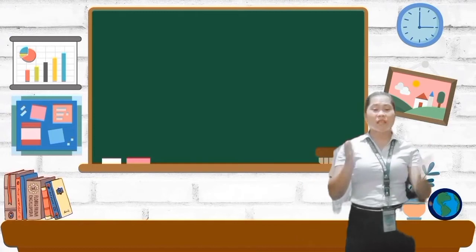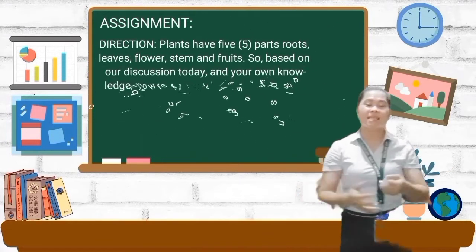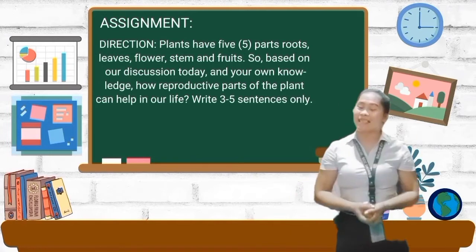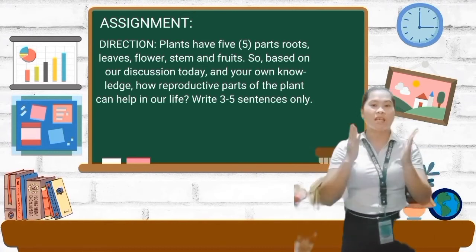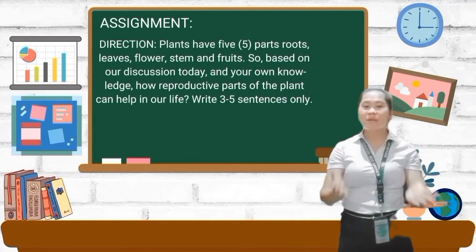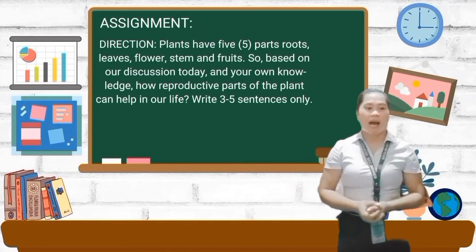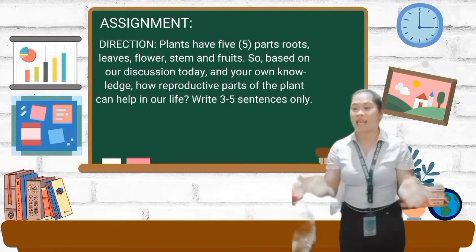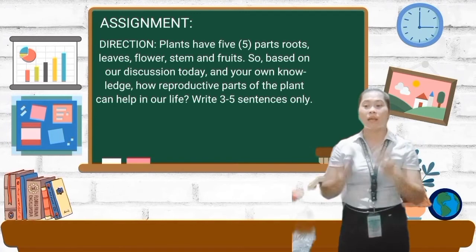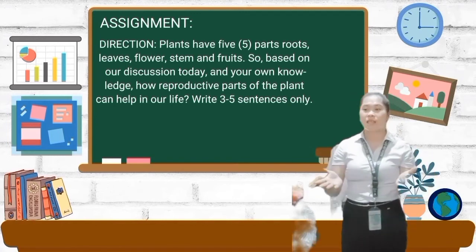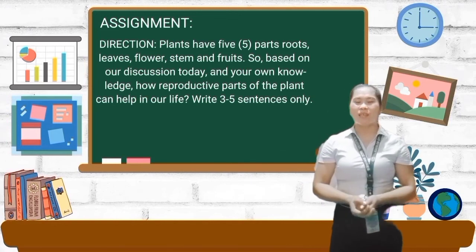Before we end class, I will give you an assignment. So who wants to read our direction? Yes, Marga. Okay, very good. So I will read the direction again so that you can understand it better. Plants have five parts: roots, leaves, flowers, stem, and fruits. Based on our discussion today and your own knowledge, how can the reproductive parts of plants help in our life? Write three to five sentences only. Understood? Do you have any questions or clarifications? Yes, Marga — okay, she's asking about the deadline. So class, you can pass it by next week. If no other questions, please arrange the chairs, get your things, and you can go now. Bye, class!